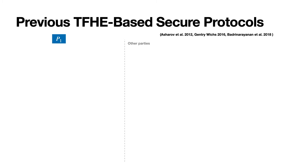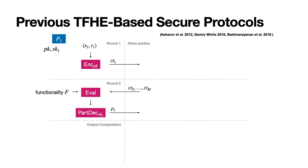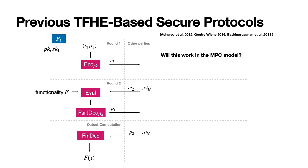The previous work on secure computation using TFHE all used the same general strategy, and I'll explain why this strategy doesn't immediately generalize to our model. In round one, party one starts by encrypting its input and randomness and sending the resulting ciphertext to all the other parties. In round two, after receiving all the other parties' ciphertexts, it uses these as inputs to the evaluation algorithm, outputting the circuit corresponding to the functionality of the MPC protocol. It then runs the partial decryption algorithm on the resulting ciphertext and broadcasts this partial decryption. The problem is the same: we run into simultaneous broadcasts.